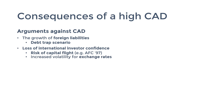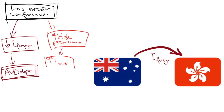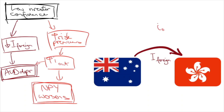This brings me to another consequence of a high CAD: increased volatility for exchange rates. Aside from withdrawing investments, investors also have another option — to demand higher interest rates as a risk premium. Loss of investor confidence can cause debt servicing costs to increase further, worsening foreign liability levels and the NPY deficit.